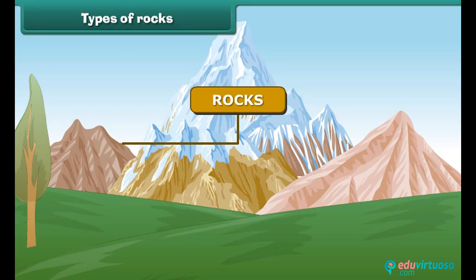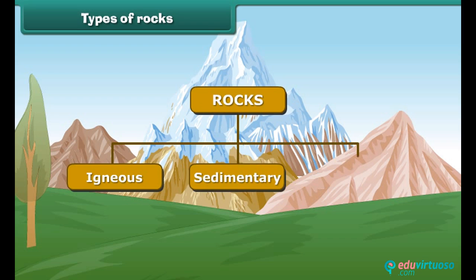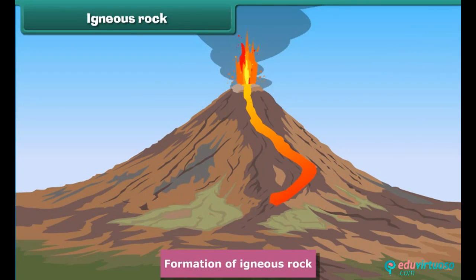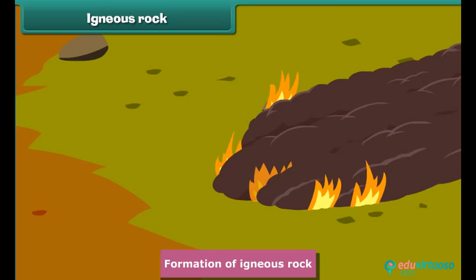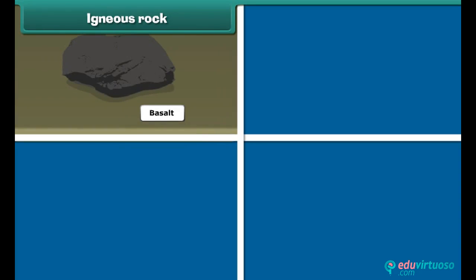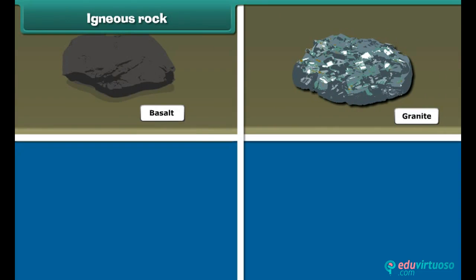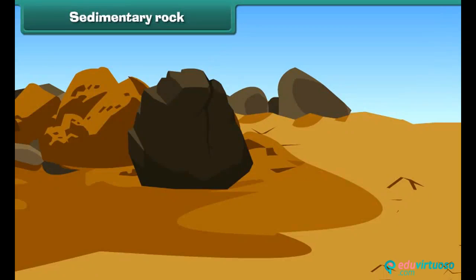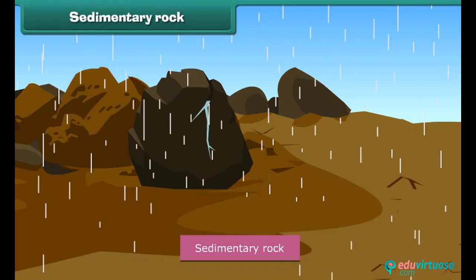These are igneous rocks, sedimentary rocks, and metamorphic rocks. Igneous rock is formed when molten rocks like lava in volcanoes cool and get hardened and solidified. It is often shiny and glossy. Basalt, granite, pumice, and quartz are examples of igneous rocks.